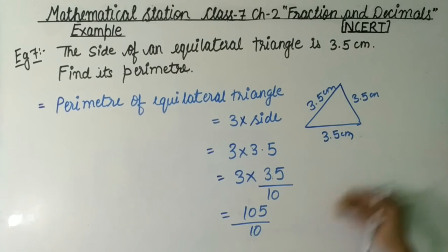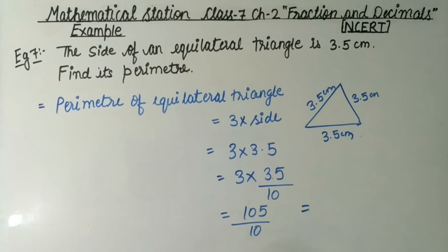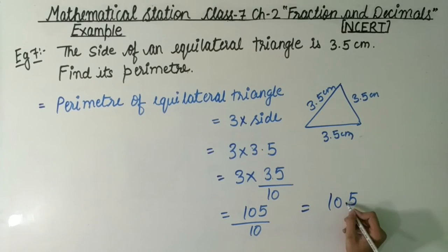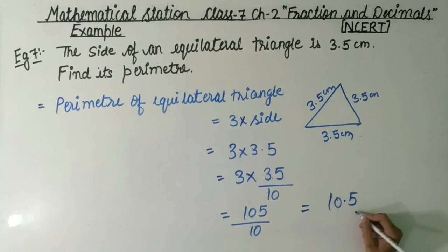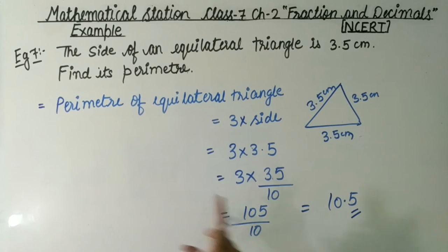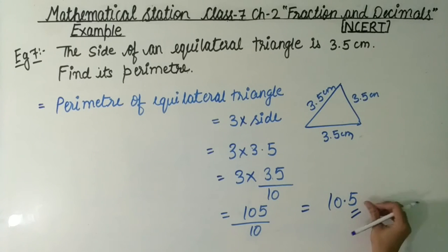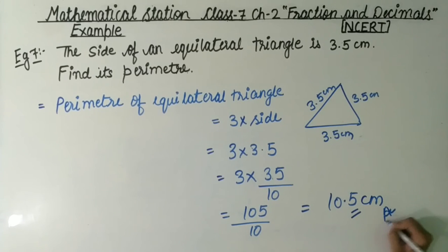We use 10 as the denominator. We count one decimal place from the right. The result is 10.5 cm. So the perimeter of the equilateral triangle is 10.5 cm.